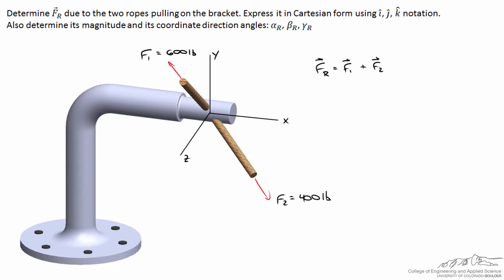It turns out for this problem F1, or rope one, is in the y-z plane, and one thing we know is the slope of this rope. Drawing a line parallel to the y axis and a line parallel to the z axis, it turns out to be a 3, 4, 5 triangle.